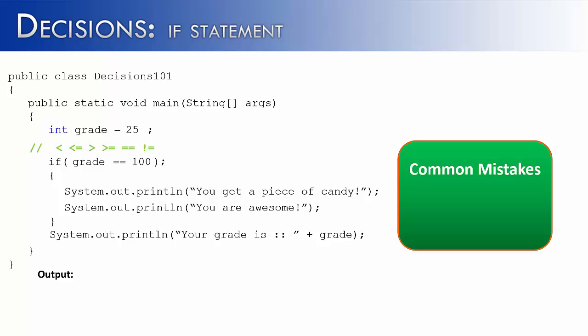Next, I want to show you some common mistakes with if statements. Probably one of the most common mistakes is on the screen right now. Hopefully you can pick it out - and that is the semicolon at the end of the if statement. If you put a semicolon there, it's going to end the if statement before it ever begins. So if I ran this code, even though I made a 25 on my grade, it would still say you get a piece of candy, you are awesome, your grade is 25.